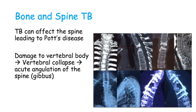TB can affect bone and it tends to affect the spine, leading to something called Pott's disease. As we can see in these images, there is damage to the vertebral body leading to vertebral collapse and an acute angulation of the spine called gibbus. We can see significant damage in the spine leading to that acute angulation.